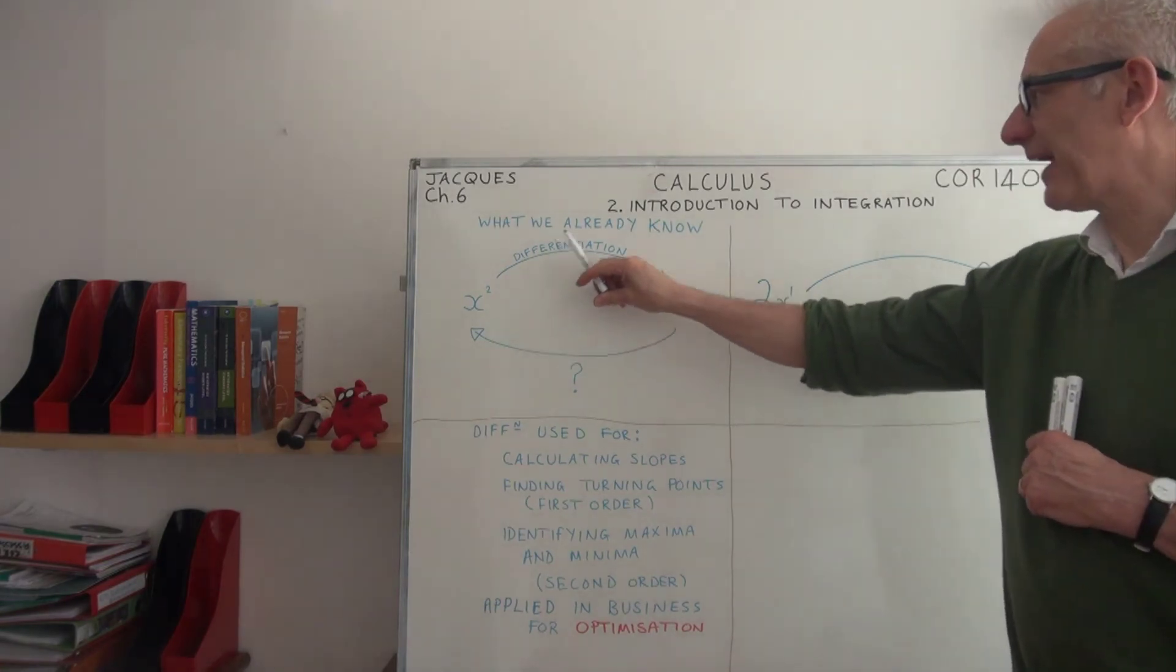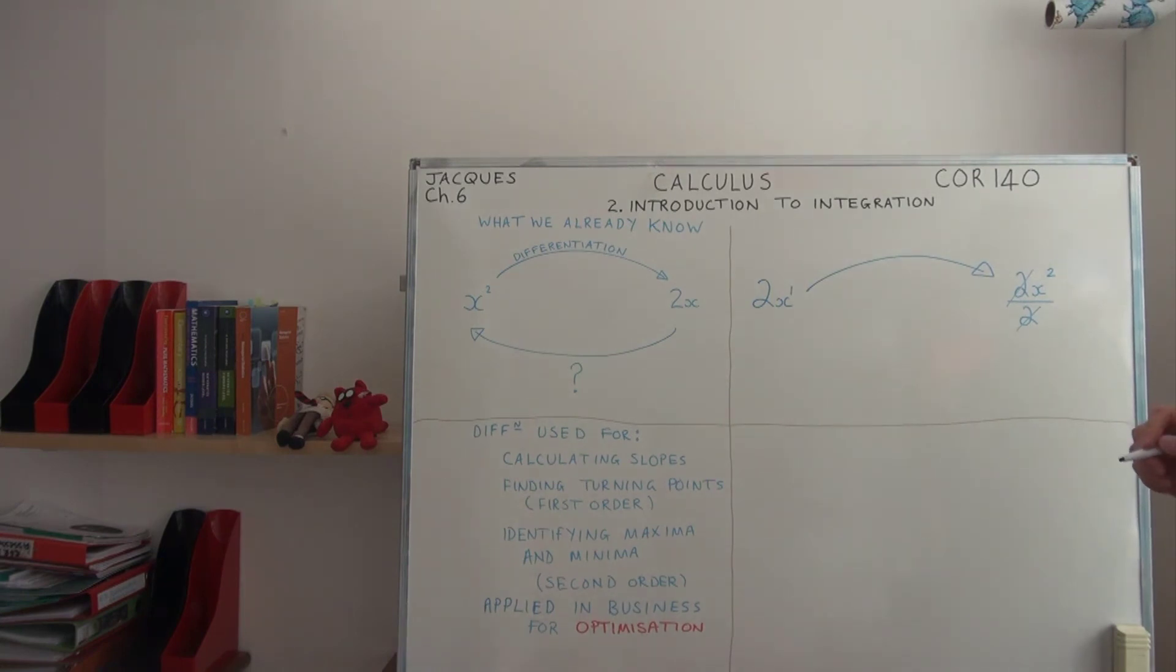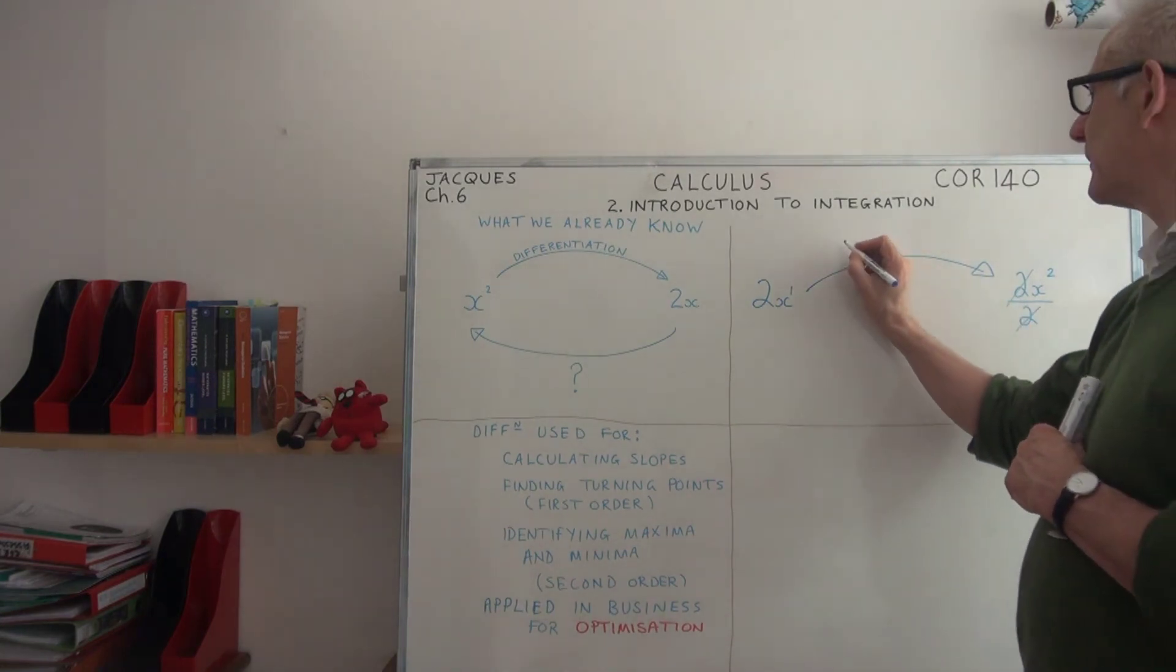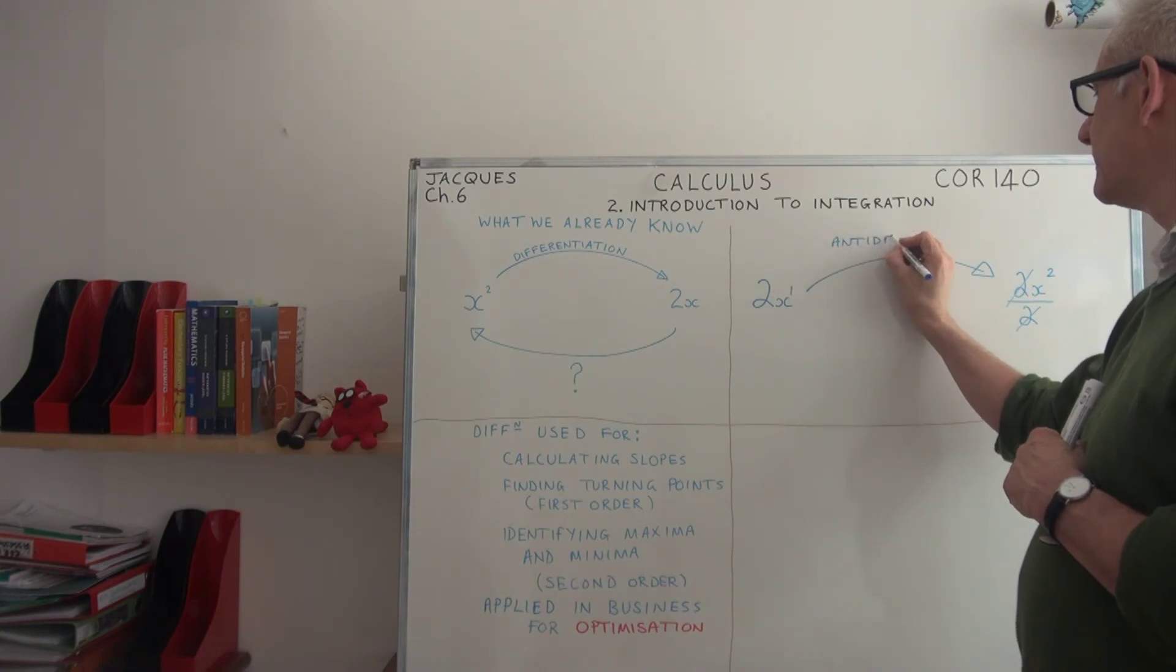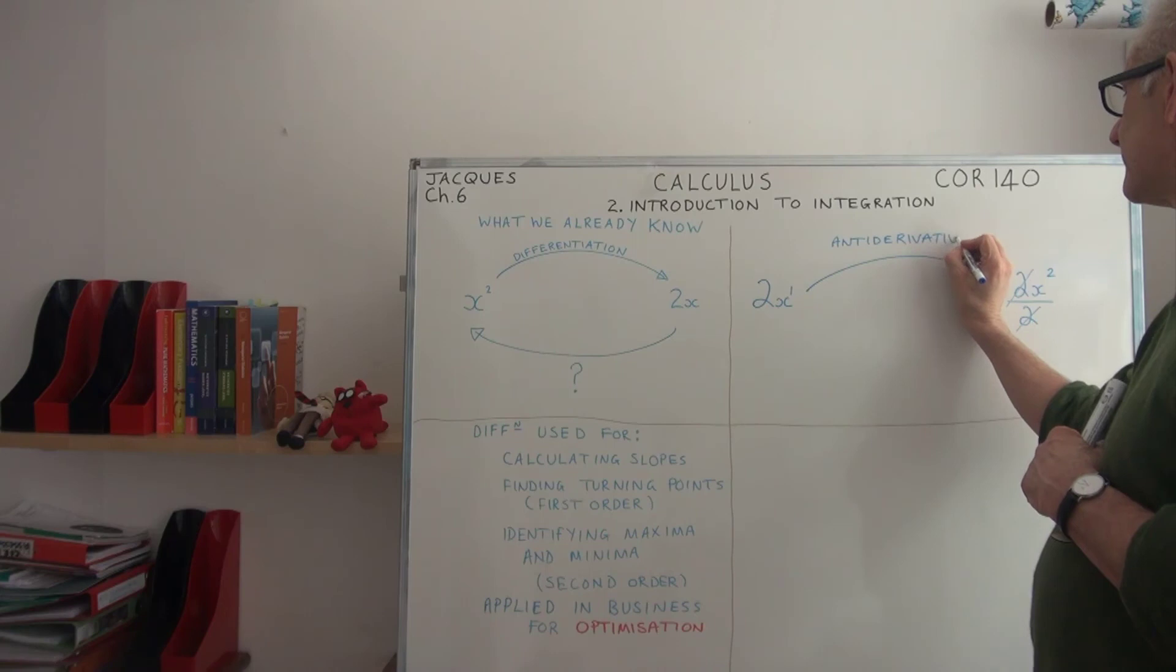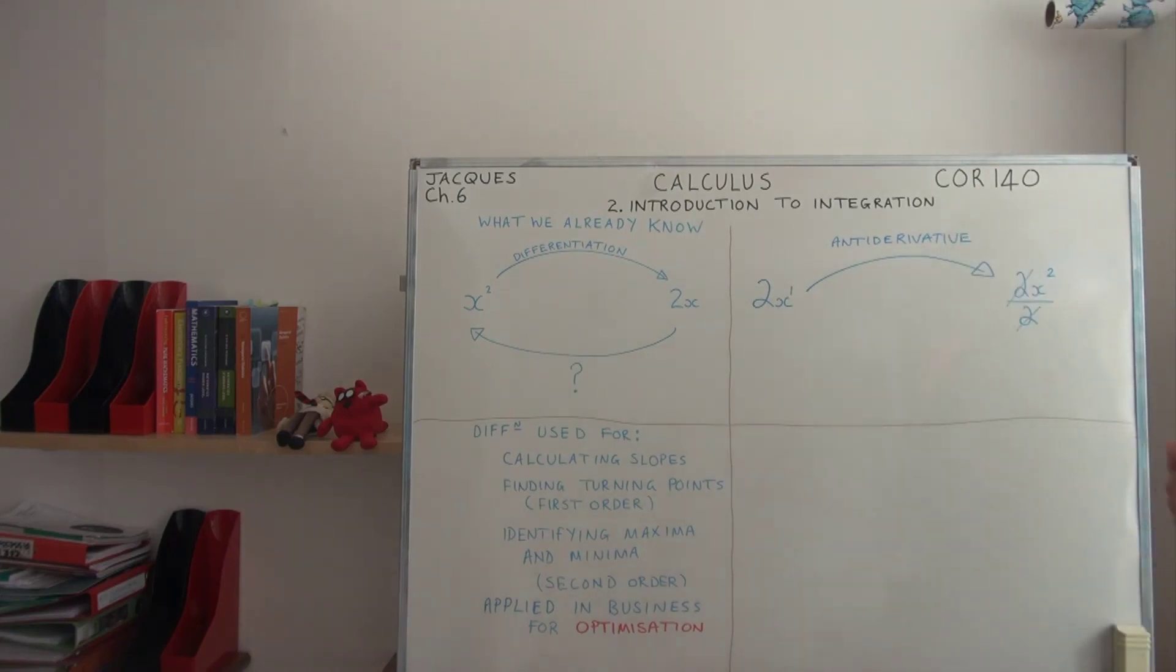Because what we're doing is going backwards on a differentiation, we give this operation a name. We call this the antiderivative.